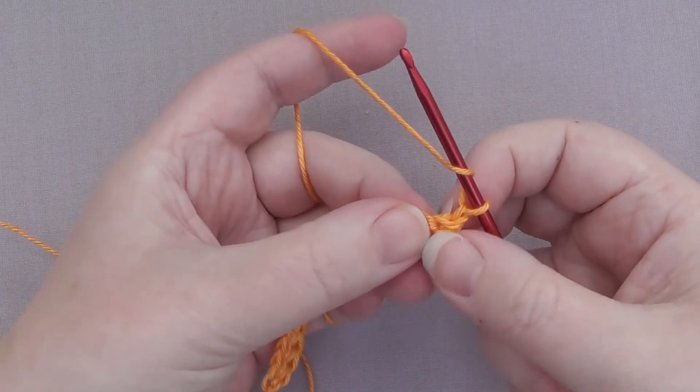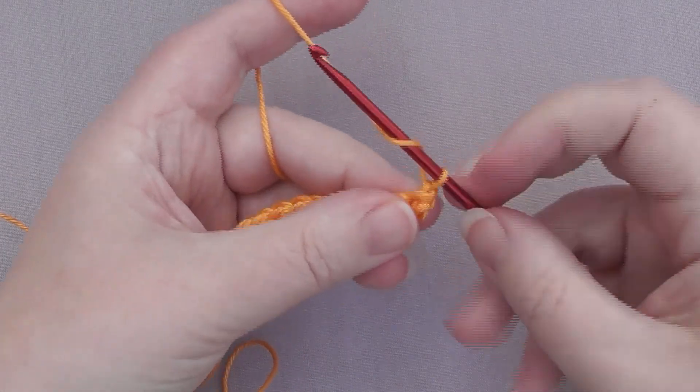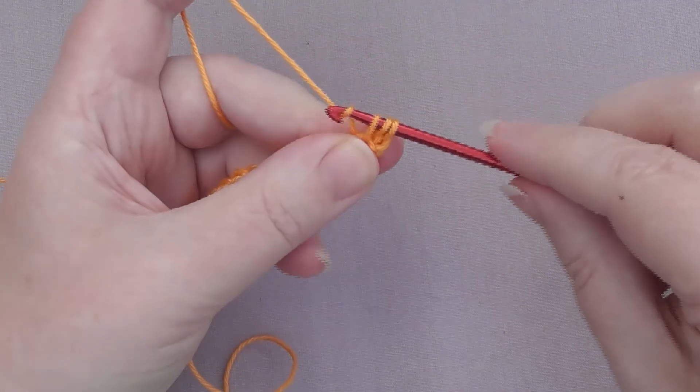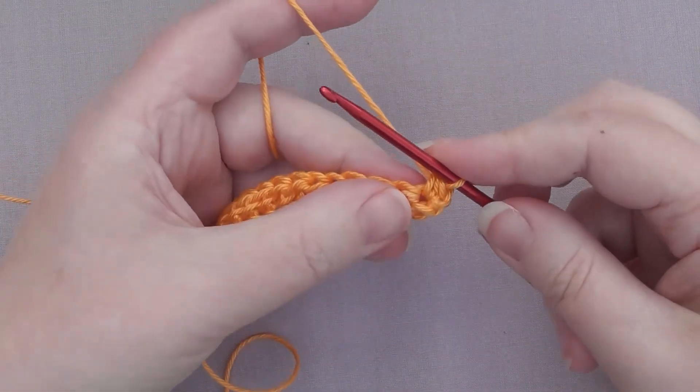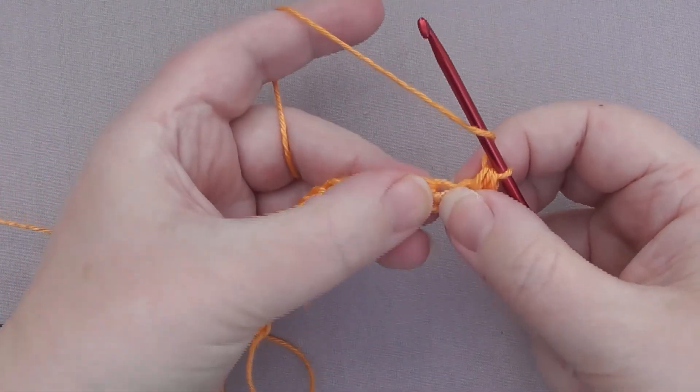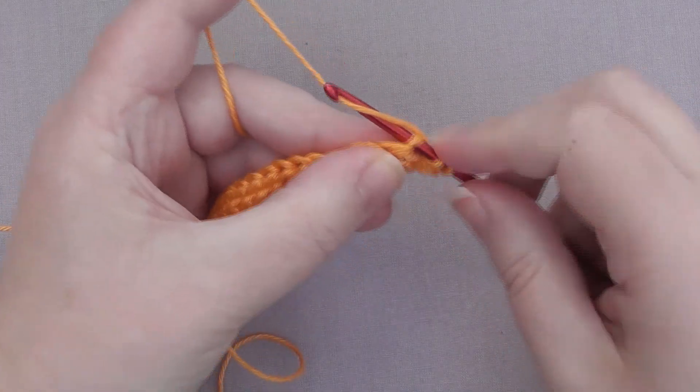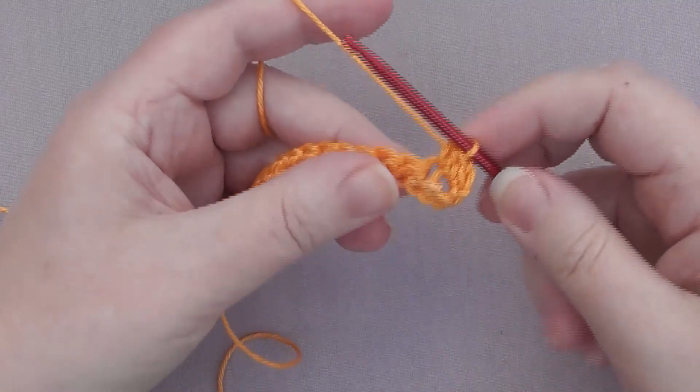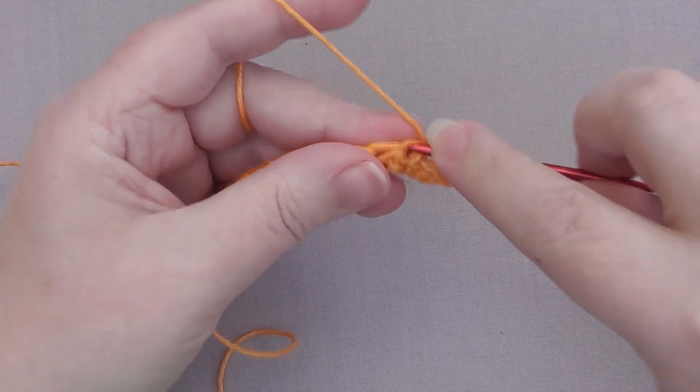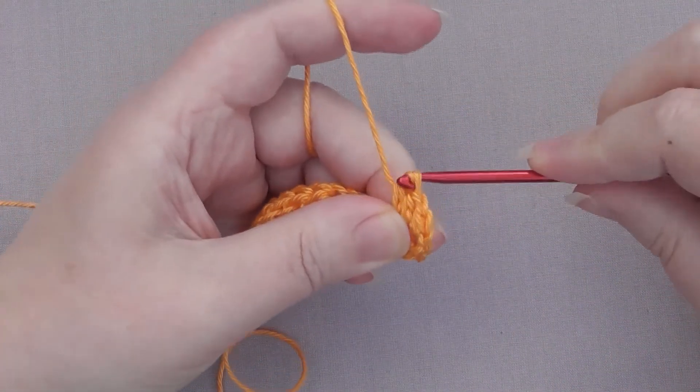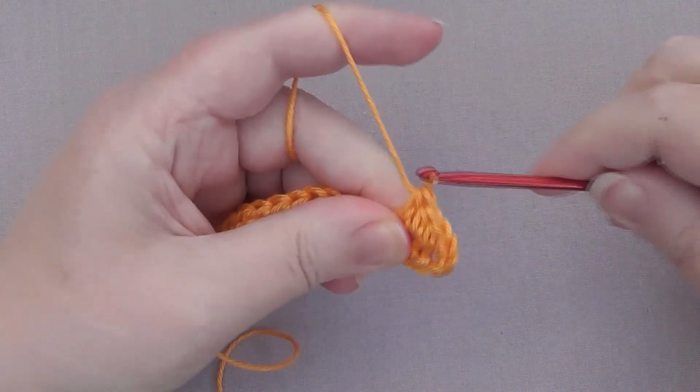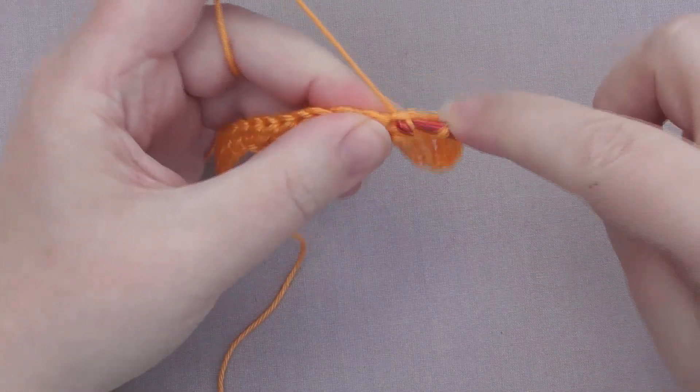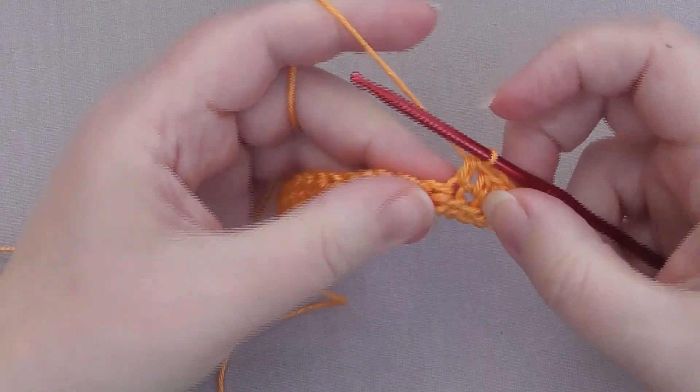And this is where you do the basic normal half double crochet or half treble crochet UK terms. So yarn over. Make sure you're going into this first stitch here. Your hook is right above it, but you don't want to miss it. So, yarn over and go through. Yarn over and pull up. Yarn over and pull through all 3 loops. That's your first one then. Yarn over. Find your next stitch there. Go through. Yarn over. Pull back through. See the 3 again. Yarn over and pull through all 3 loops.